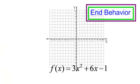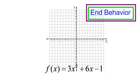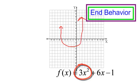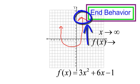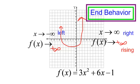Let's work a problem. Tell me the end behavior of this function: F of X equals 3X squared plus 6X minus 1. I didn't say graph it — I just want to know what the end behavior is. What's the general shape? It's a positive X squared, so I know it's going to open up. As my X's are approaching positive infinity, my F of X is also approaching positive infinity. As I look to the left, my F of X is going up again — rising on both ends.